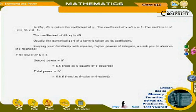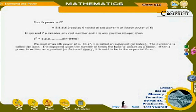Keeping your familiarity with squares and higher powers of integers, observe the following: the 1st power of 6 is 6; the 2nd power is 6² = 6·6, read as '6 square' or '6 squared'; the 3rd power is 6³ = 6·6·6, read as '6 cube' or '6 cubed'; the 4th power is 6⁴ = 6·6·6·6, read as '6 raised to the power 4' or '4th power of 6.'